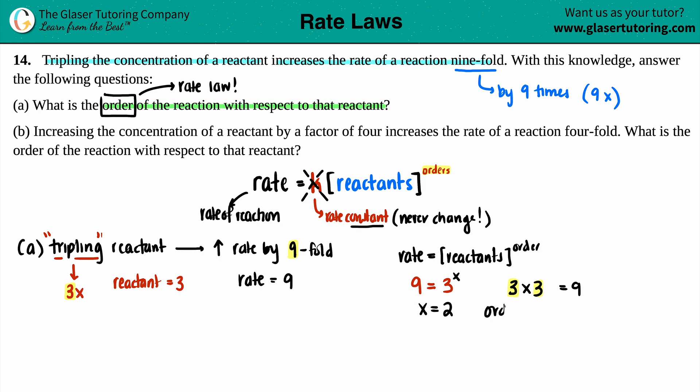This is the order. Since we found that exponent, we found the order - the order is a 2. This is called second order. We can say that we either have an order of two, or we can say that it's second order with respect to this specific reactant.